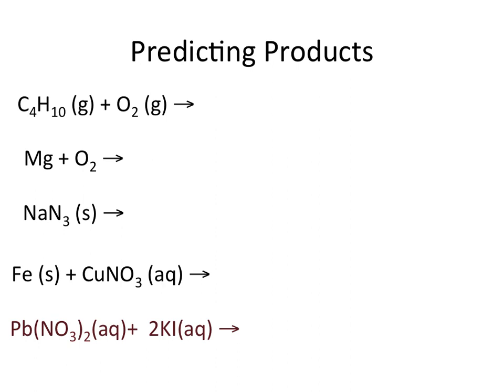Let's look at some practice predicting products. For this first reaction, we have C4H10 and O2. I know I have a hydrocarbon — a compound made of carbon and hydrogen — and I have oxygen, so most likely this is going to be a combustion reaction. A combustion reaction of any hydrocarbon gives CO2 and H2O. So this is a combustion reaction, and I've been able to predict my products based on the reactants given.